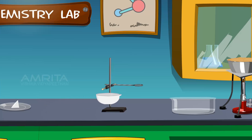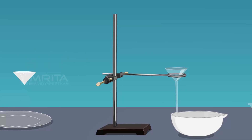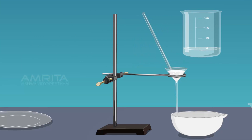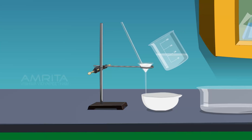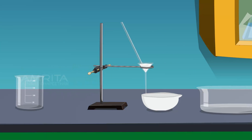Take the china dish and place it below the stand. Take the funnel and fix it to the stand. The stem of the funnel should touch the wall of the china dish to avoid splashing out of the solution. Place the filter paper in the funnel. Place the glass rod over the funnel and pour the solution into the funnel through the glass rod and collect the filtrate in the china dish. The insoluble impurities are left behind on the filter paper.